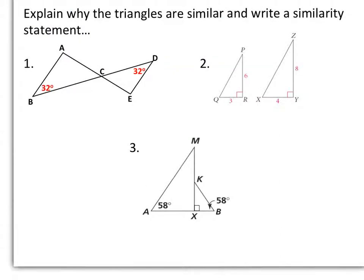Looking at some examples, we're going to explain why the triangles are similar and write a similarity statement. In number one, we are given that angle B is congruent to angle D, and we notice that we have vertical angles ACB and ECD. So we can say that angle ACB is congruent to angle ECD because those are vertical angles. Therefore, these two triangles are similar by the angle-angle similarity postulate.